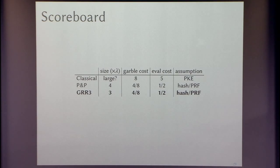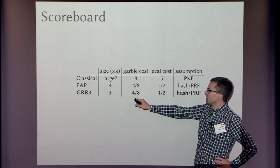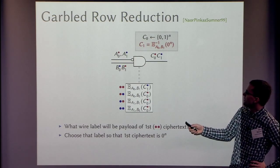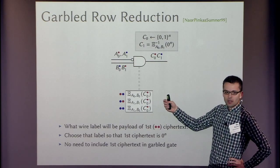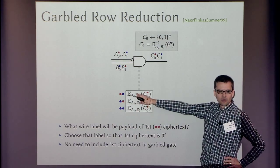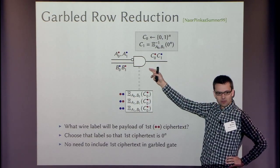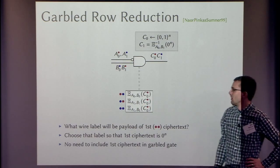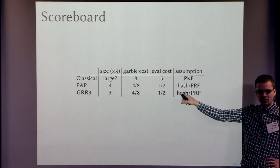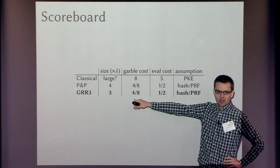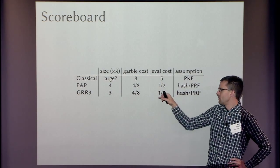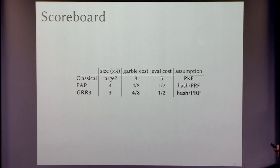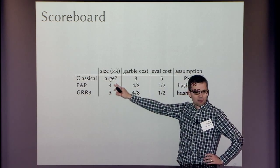To explain the other columns: when garbling, you still perform four calls to the encryption function per gate. The cost to evaluate uses point-and-permute — you go to the correct position and decrypt that one ciphertext. Depending on whether you use a hash or PRF instantiation, garbling costs four calls to the hash or eight calls to the PRF; evaluating costs one hash call or two PRF calls. But I'm more excited about the size column — we went from four to three ciphertexts, giving us GRR3.